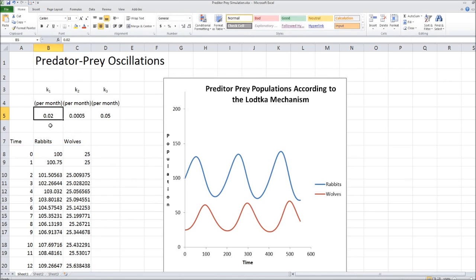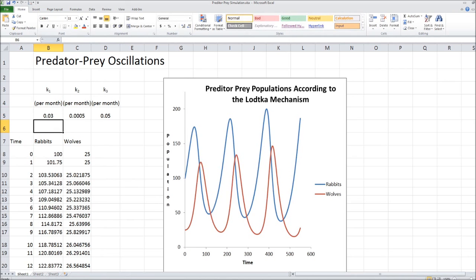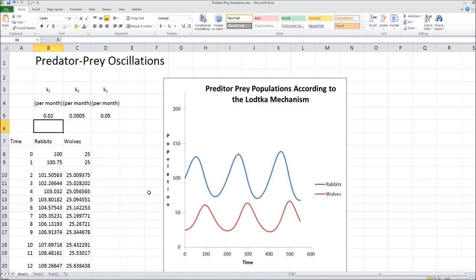And you can play little games with this. If we want to change the rate at which rabbits are born, we can change it from 0.02 to 0.03. You can see that it increases everything, but it doesn't affect just the rabbits. It affects the wolves, as you might imagine. So you can do nice little simulations.